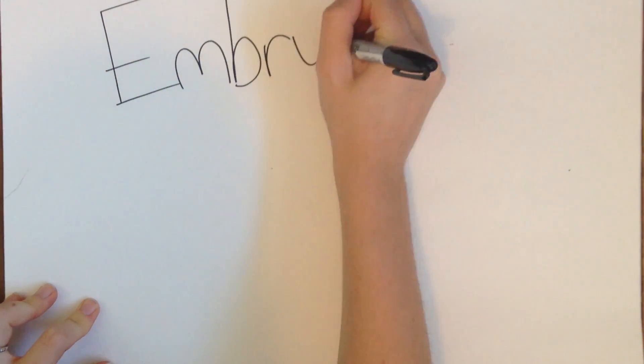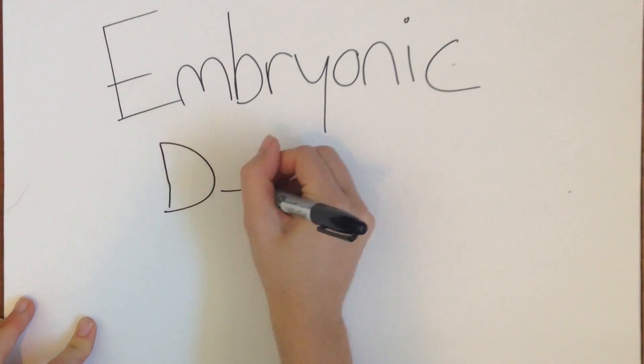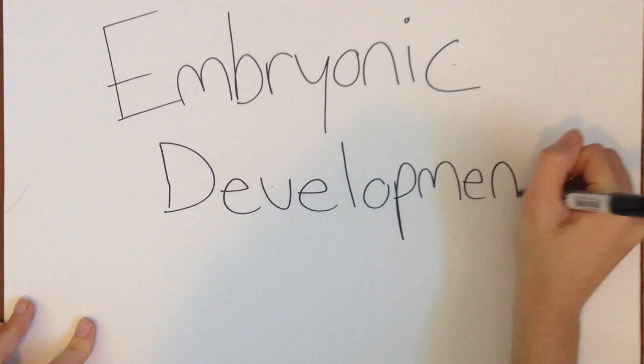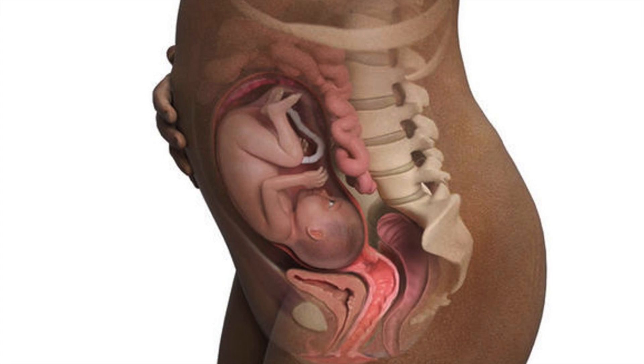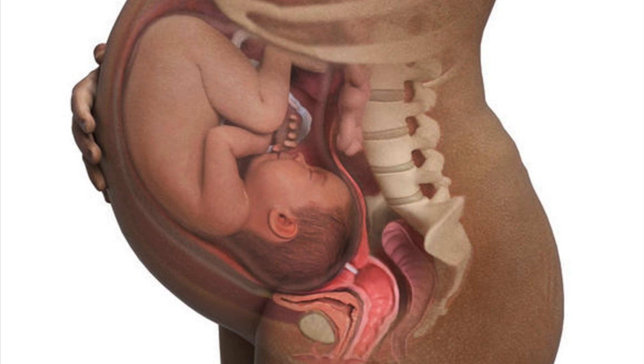Embryology is the study of prenatal development, which is the time from fertilization to birth. A developing human is referred to as an embryo until the eighth week and a fetus from the ninth week until birth. During this presentation we will be focusing on the embryonic stage of development.